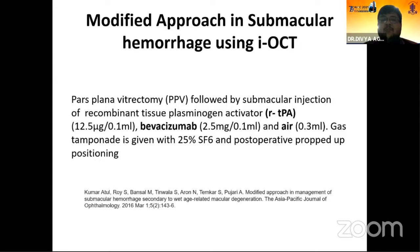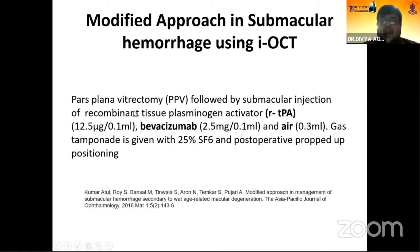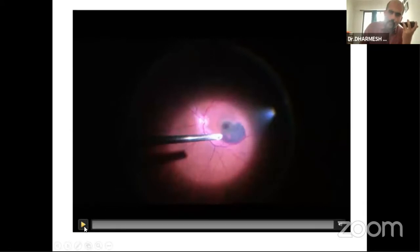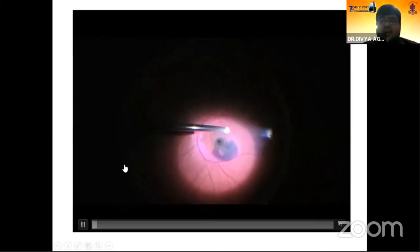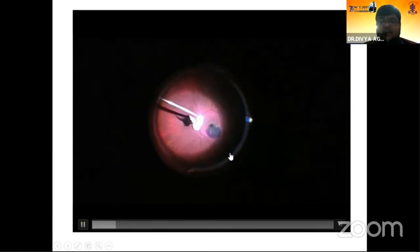We performed pars plana vitrectomy for submacular hemorrhages, in which we did pars plana vitrectomy followed by subretinal injection of a cocktail of recombinant tissue plasminogen activator. Here, as we can see, the hemorrhage is involving up to the vascular arcades and the center of the fovea.